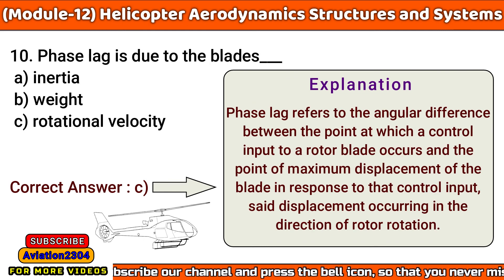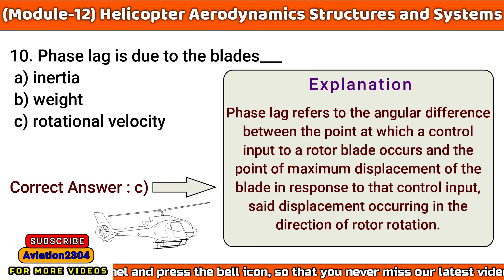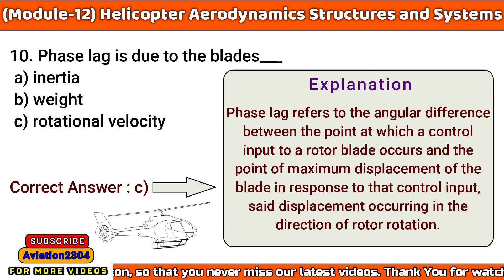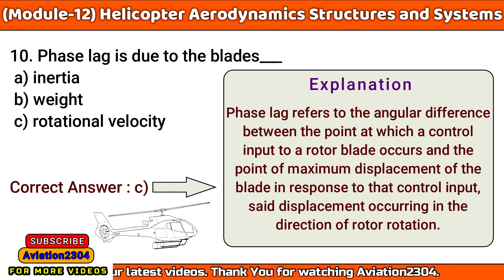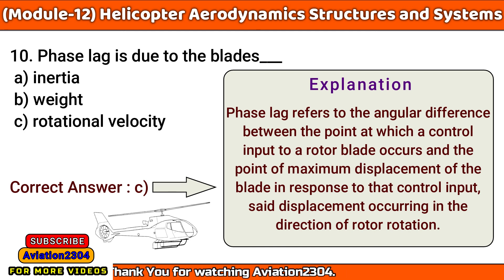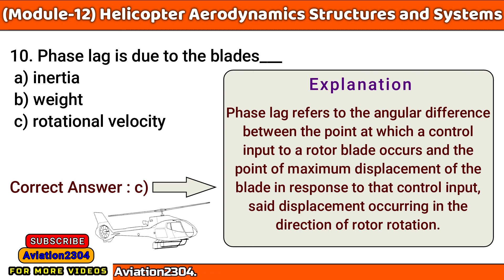Phase lag is due to the blade's: A. Inertia, B. Weight, C. Rotational velocity. The correct answer is C. Phase lag refers to the angular difference between the point at which a control input to a rotor blade occurs and the point of maximum displacement of the blade in response to that control input, with said displacement occurring in the direction of rotation.